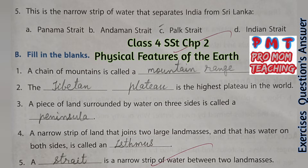Fill in the blanks. First: A chain of mountains is called a mountain range. Second: The Tibetan Plateau is the highest plateau in the world. Third: A piece of land surrounded by water on three sides is called a peninsula. Fourth: A narrow strip of land that joins two large land masses and has water on both sides is called an isthmus. Fifth: A strait is a narrow strip of water between two land masses.